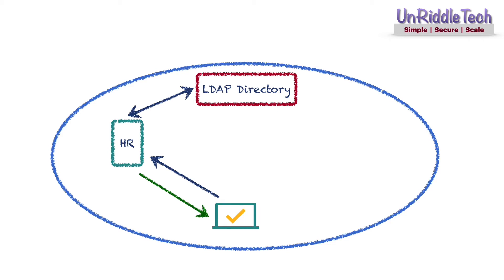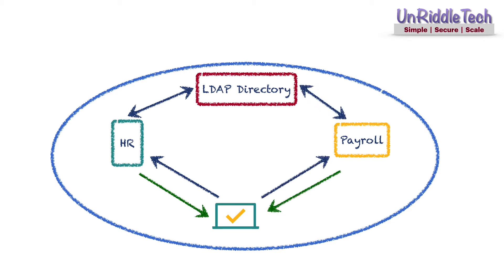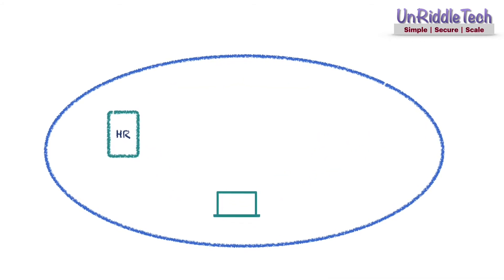However, the user will have to type their username and password each time they try to log in to a different application. For example, the payroll application would follow the same process — verifying with the LDAP directory and then providing write access. Is it possible to avoid typing the same credentials each time when the user tries to log into different applications? Yes, it is possible by configuring single sign-on, or SSO.